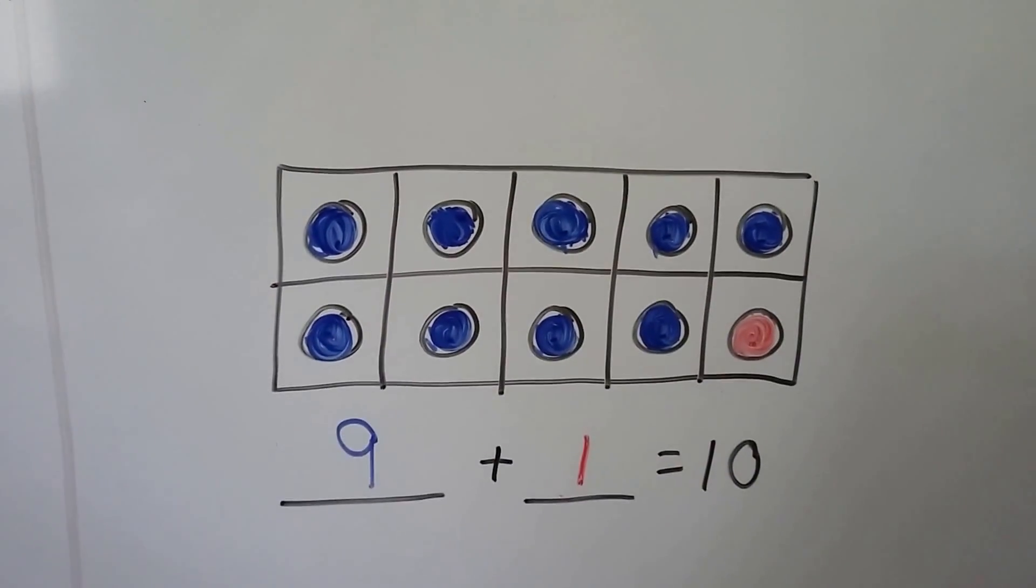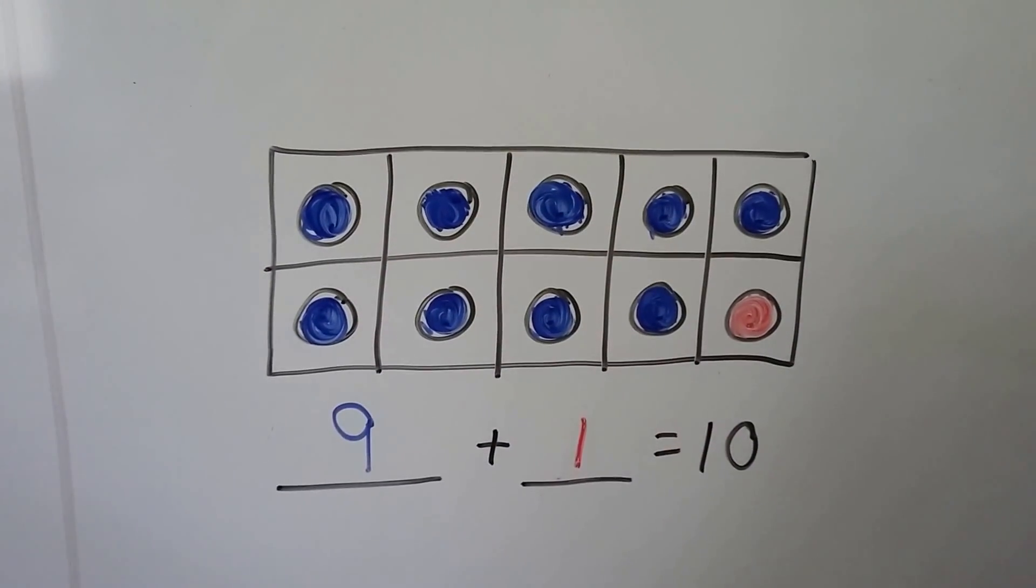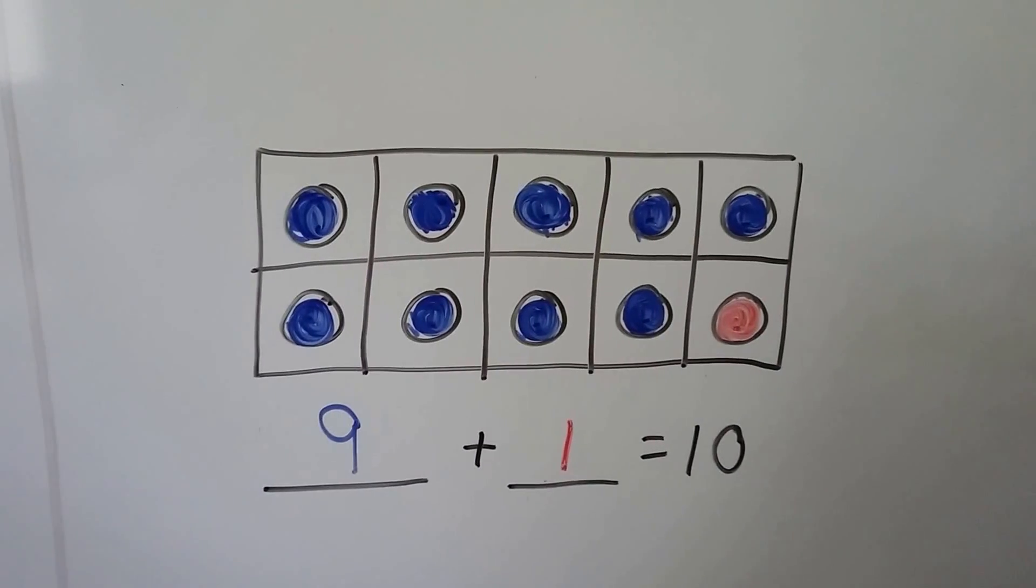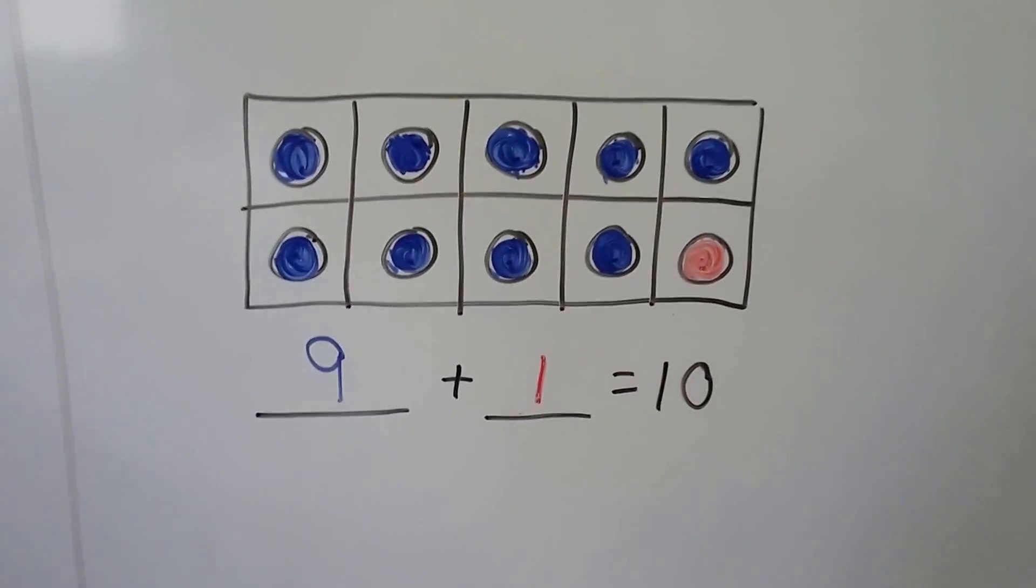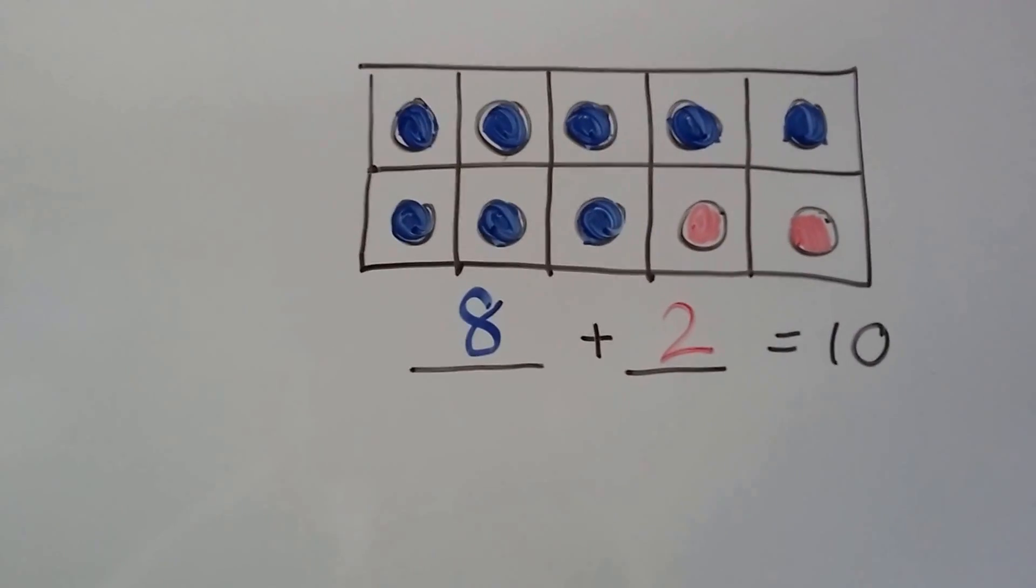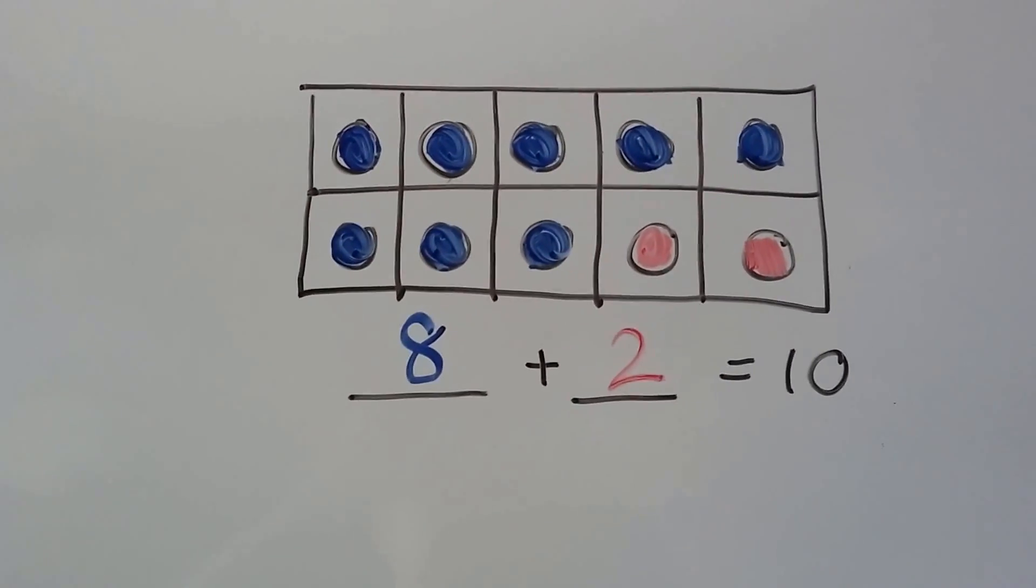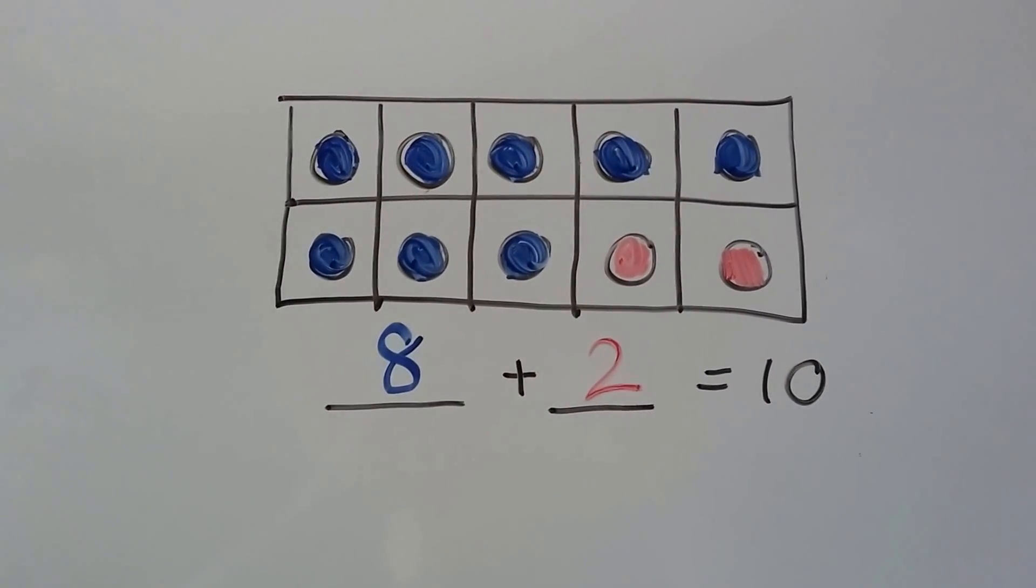If we had 9 blue ones and 1 red one, 9 plus 1 equals 10. If we had 8 blue ones and 2 red ones, we'd have 8 plus 2 equals 10.